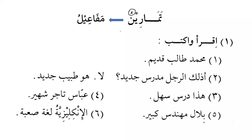We have learned that some nouns are diptotes — they do not accept tanwin. We have learned seven categories of that. Now there are some patterns we need to learn. We learned about categories like names of prophets and Arabic women — seven categories — and now we need to learn patterns where a word on that pattern will also be a diptote, mamnu' mina al-sarf, without tanwin.